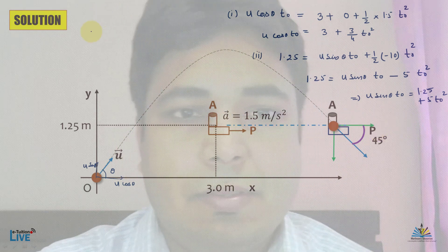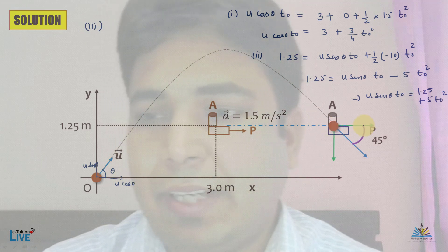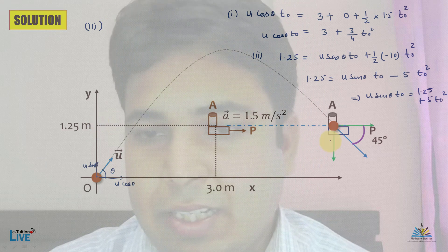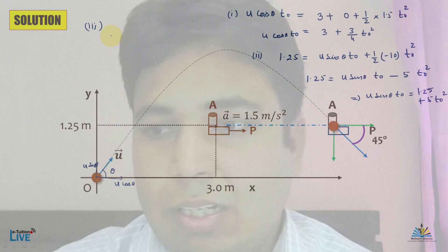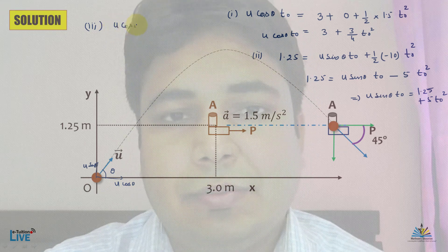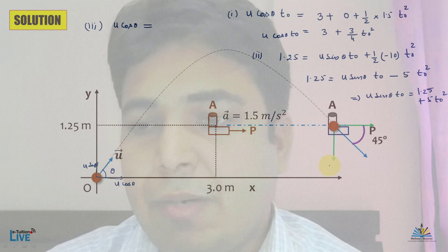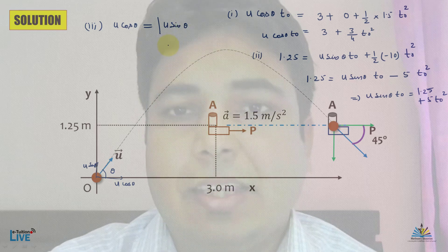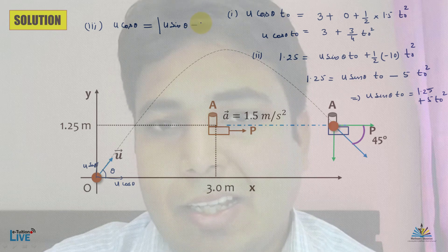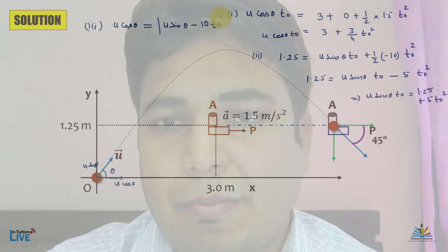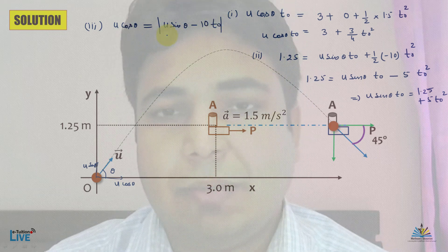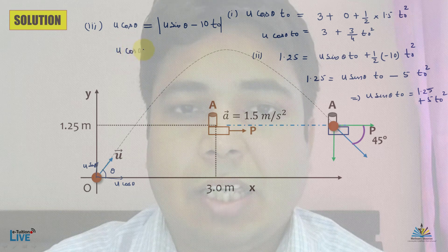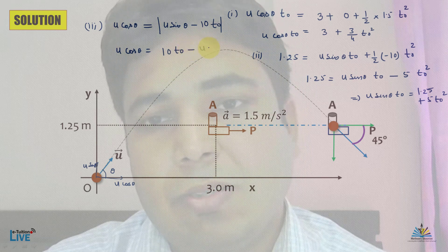Now for the third equation, we use the 45-degree condition: the velocity component along the positive x-axis and the magnitude of the negative y-axis component must be equal at time t₀. Since there is no acceleration for the projectile along x, the x-component stays u·cos θ. Setting this equal to the magnitude of the y-component: u·cos θ = |u·sin θ − 10t₀|, which gives u·cos θ = 10t₀ − u·sin θ.